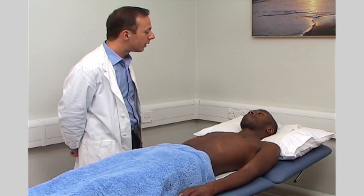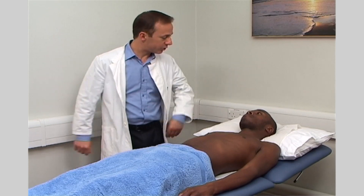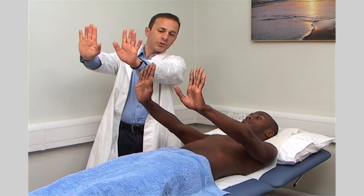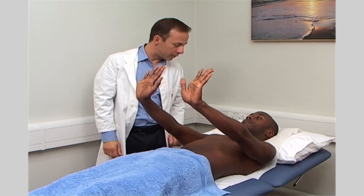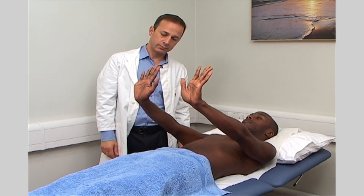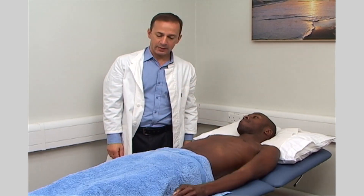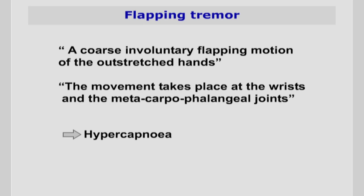Assess the patient for flapping tremor — a coarse, involuntary, non-rhythmic flapping motion at the wrists when the hands are outstretched in front of the patient. When checking for flapping tremor, wait for at least 20 to 30 seconds. This tremor commonly results from liver failure, but may also be seen in kidney failure and in brain damage due to a metabolic disorder.